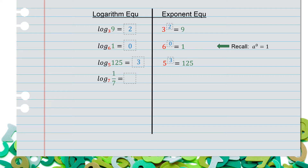Log base 7 of 1/7 equals what? Our base was 7, so that means 7 raised to some power equals 1 over 7. We're trying to find an exponent, so you need to refer to your exponent rules. A to the negative n power is the reciprocal. Since 7 is in the bottom of a fraction, it means it's going to have a negative exponent. So log base 7 of 1/7 equals the power of negative 1.